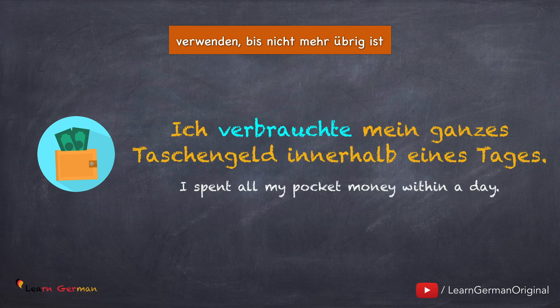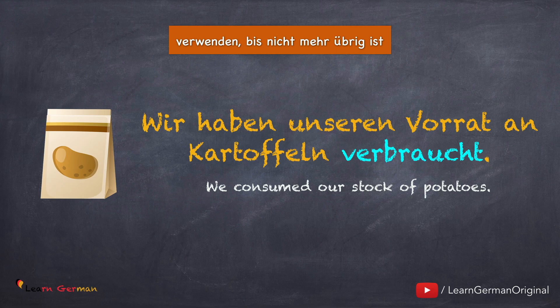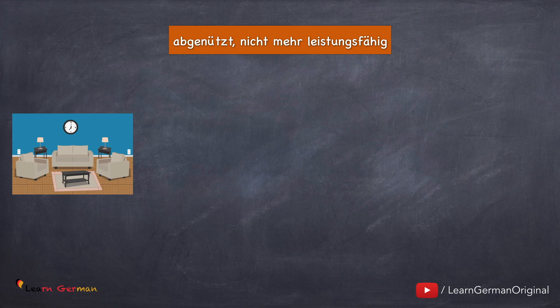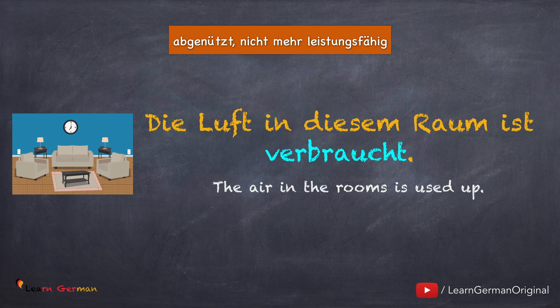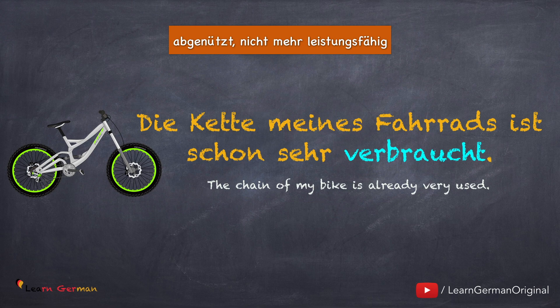Zum Beispiel, ich verbrauchte mein ganzes Taschengeld innerhalb eines Tages — das heißt, ich habe kein Taschengeld mehr. Das nächste Beispiel: Wir haben unseren Vorrat an Kartoffeln verbraucht — es sind keine Kartoffeln übrig. Verbrauchen benutzt man auch für Sachen, die abgenutzt sind und nicht mehr leistungsfähig sind. Zum Beispiel, die Luft in diesem Raum ist verbraucht — das heißt, die Luft enthält fast keinen Sauerstoff mehr. Hier benutzt man verbraucht meistens als Adjektiv. Die Kette meines Fahrrads ist schon sehr verbraucht.